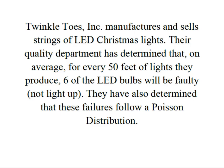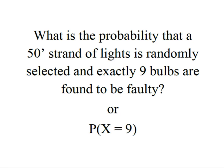In other words, they won't light up. They've also determined that the failures follow a Poisson distribution. Remember that your Poisson distribution deals with intervals, and that can be time, distance, or in this case feet of Christmas lights. What we want to know is what's the probability that a 50-foot strand of lights is randomly selected and exactly nine bulbs are found to be faulty.